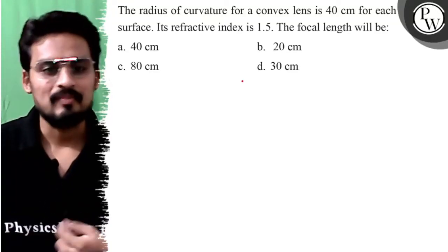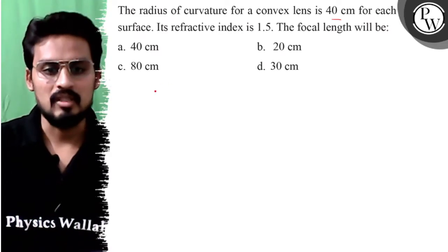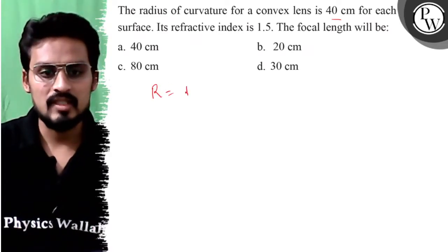Hello guys, let's see this question. The radius of curvature of a convex lens is given as 40 centimeter. So radius of curvature convex lens ki baat ho rahi hai, isliye main plus of 40 centimeter lekh raha hoon.